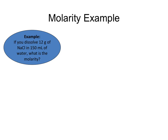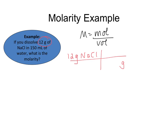In the second example, we're dissolving 12 grams of sodium chloride in 150 milliliters of water, and we want to know what the molarity is. Molarity is equal to moles of solute over volume of solution. The amount of solute is 12 grams — it is not in units of moles, so we are going to have to convert that to moles. Using our relationship of molar mass, we'll take 12 grams of NaCl and convert grams to moles.